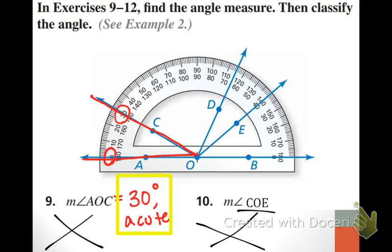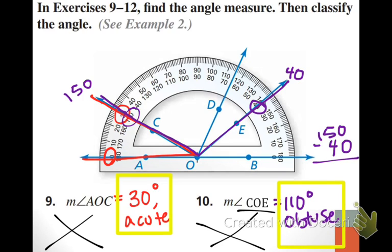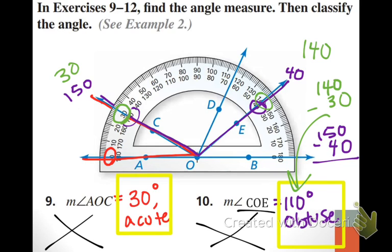Now we're going to do COE. We can read the bottom row — we've got 150 and 40. Since neither of them are sitting at zero, I'm going to subtract: 150 minus 40 equals 110, which is obtuse. Students asked how do I know which row to use — it actually doesn't matter as long as you're consistent. Reading the top row for the same angle gives 140 minus 30, which is still 110. As long as you read the same row for each ray, you get the same answer.